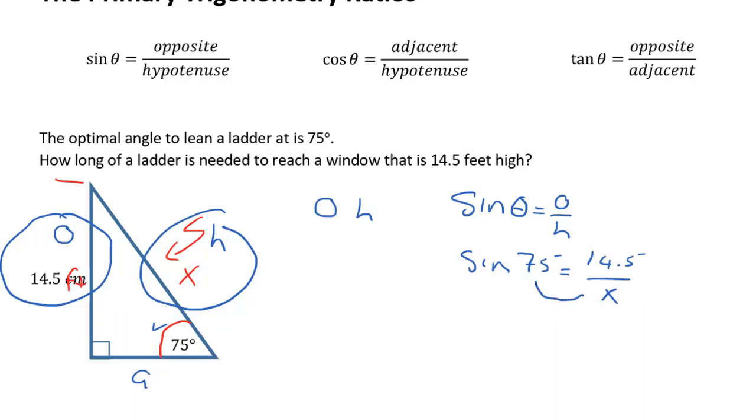I'm going to do my cross multiplying, which is going to move the x up to that side and the sine of 75 down here. We end up getting x equals 14.5 over sine of 75.